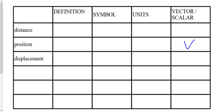Position is a vector — direction matters. What's the definition for position? It's the location of something, where something is at a specific moment in time. If you want to know the location of something, you need to know a direction associated with that. Where is Holy Trinity relative to 7-11? It's not just one kilometer from 7-11 — you need to know it's one kilometer north of 7-11. Position, the location of something, requires a direction, therefore it's a vector.